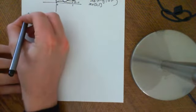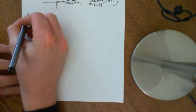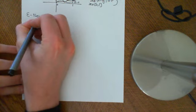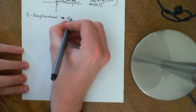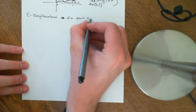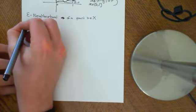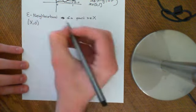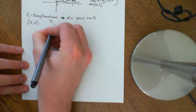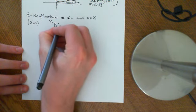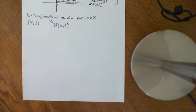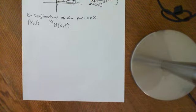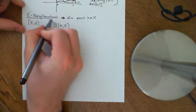The first definition is the concept of an epsilon neighbourhood — it's really just notation for something you already know. An epsilon neighbourhood of a point x, which is an element of a metric space big X with distance function d, is simply equal to an open ball around the point little x of size epsilon. That is all an epsilon neighbourhood is.